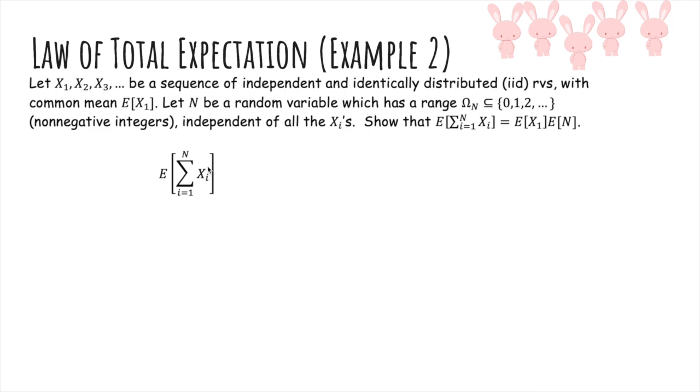So here's our expected value of the sum of X_i's. We're going to use the law of total expectation. We're going to condition on N taking on each value it can take on, little n, and weight it by the probability.